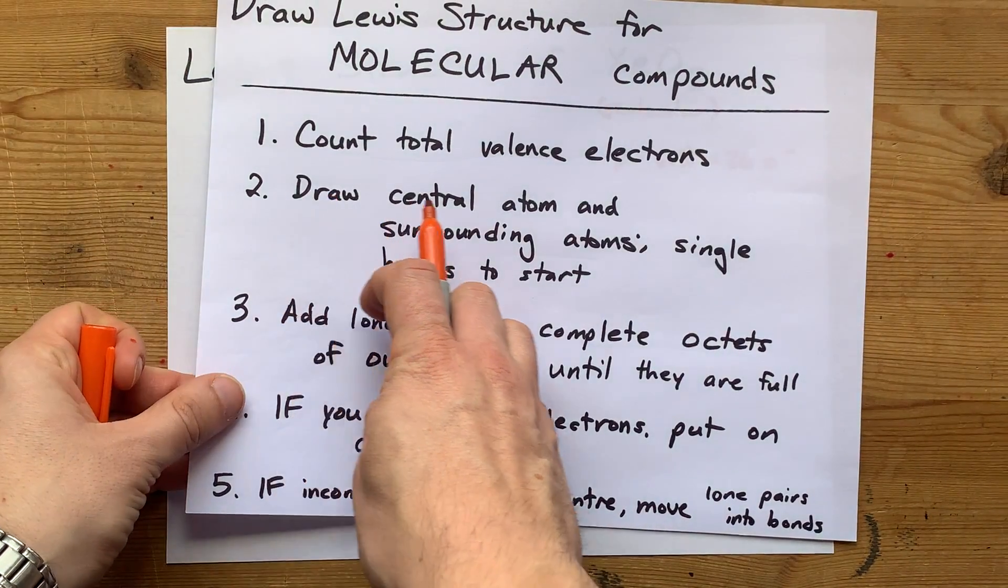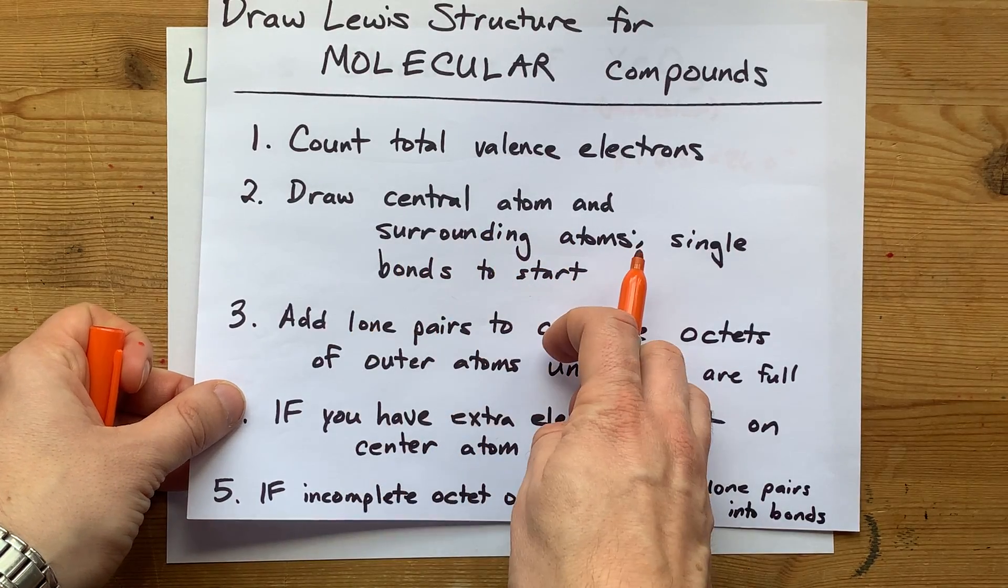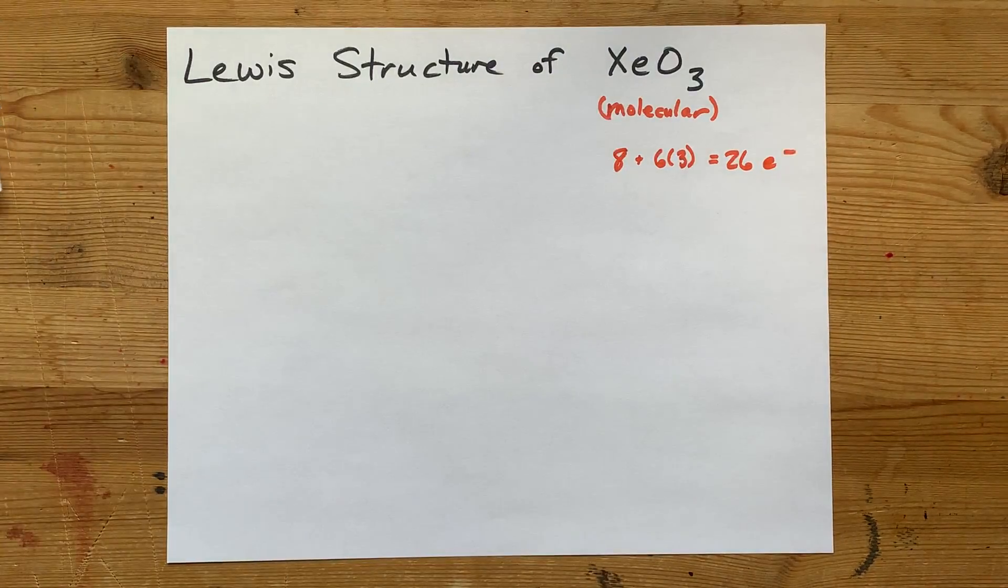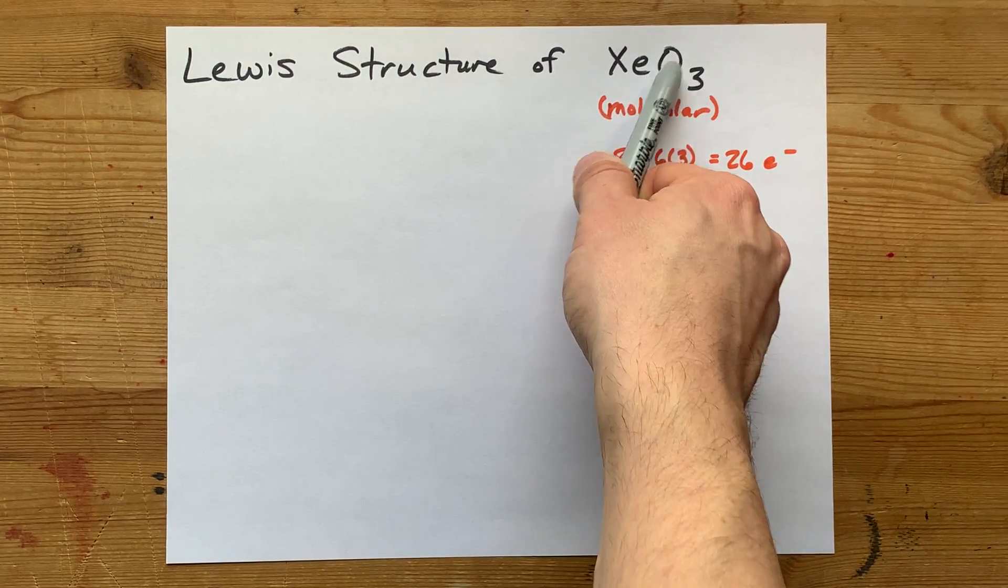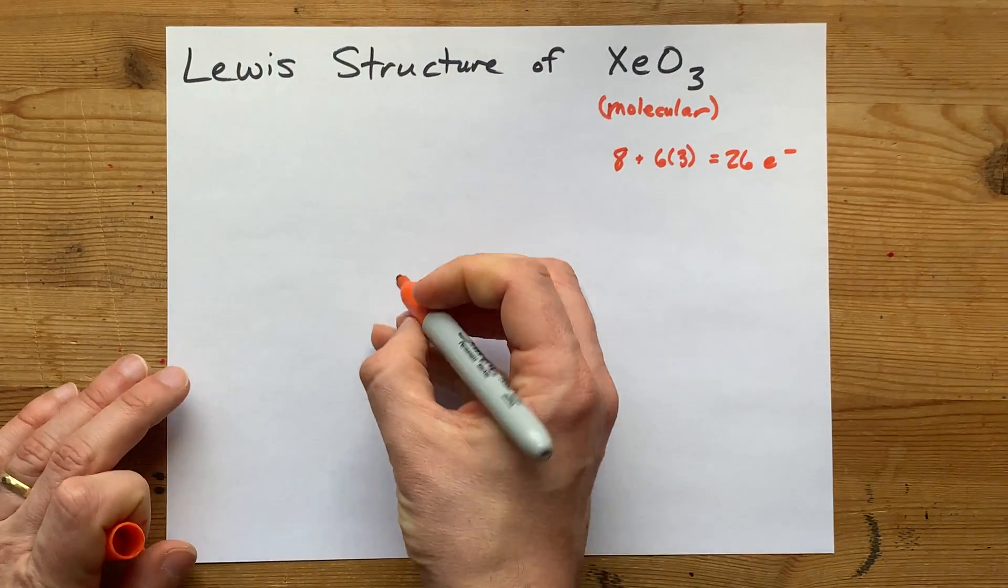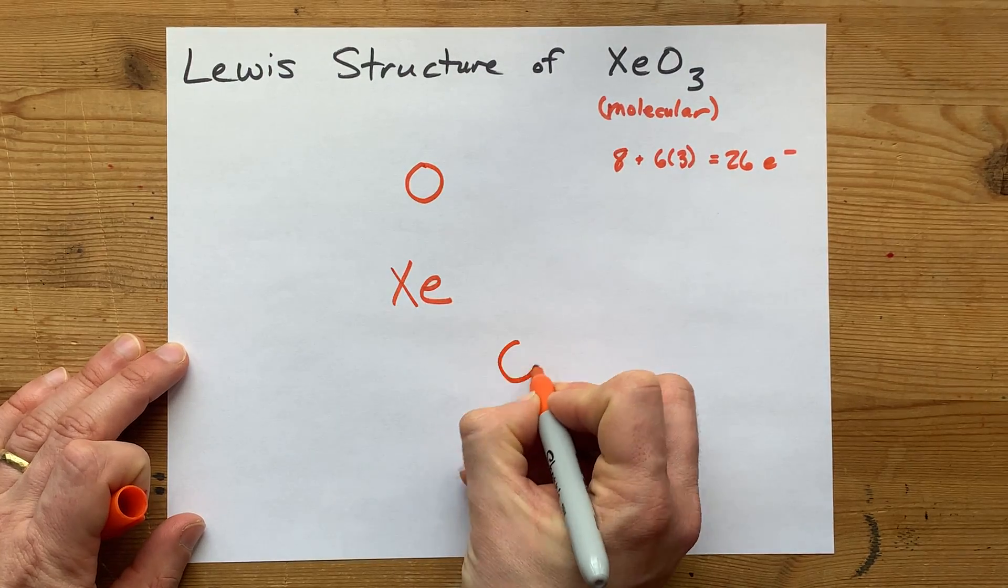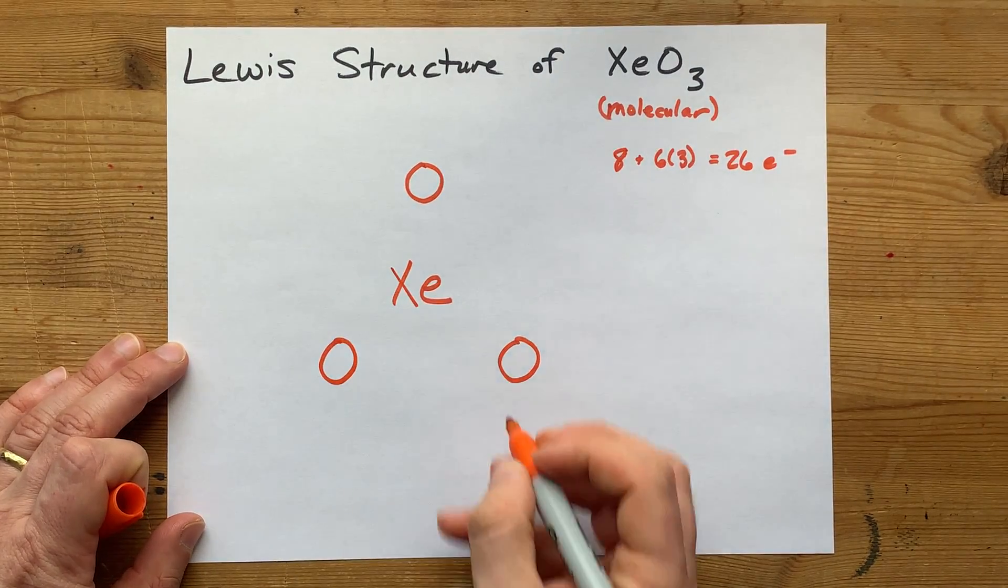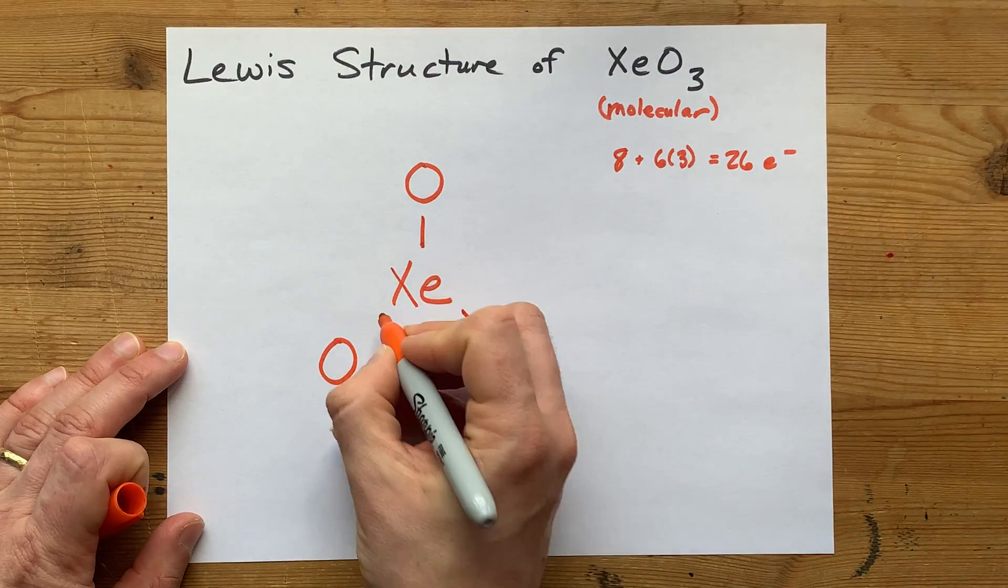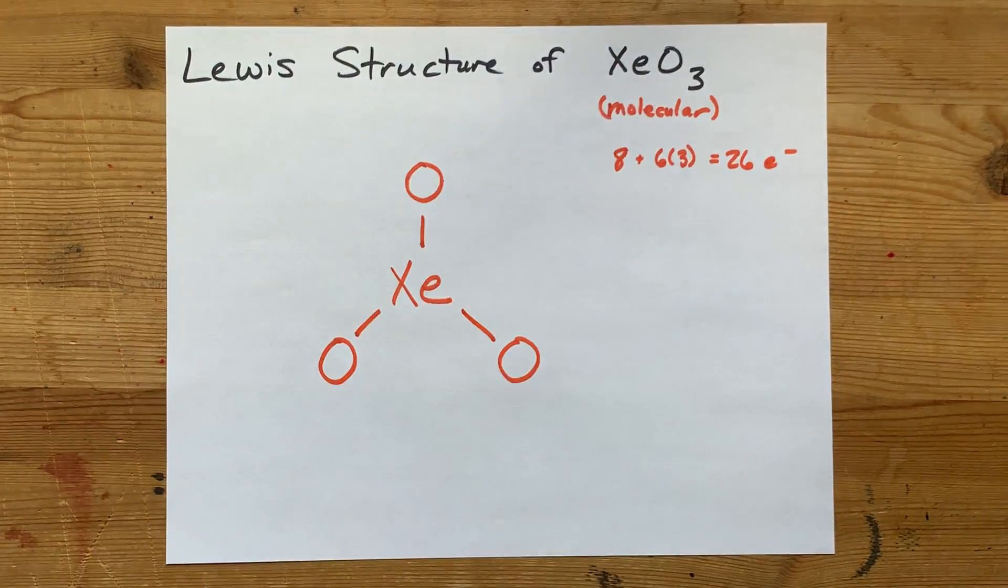We're going to draw the central atom and the surrounding atoms with single bonds to start. Now, there's 3 oxygens connected to a single xenon here. So xenon's going to go in the center, and I'm going to put 1, 2, 3 oxygens around it. And I'm going to single bond them all to start with.